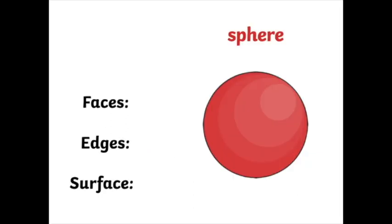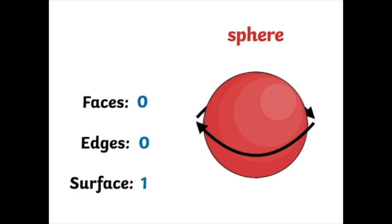What is it? It's a sphere. Do you see any faces on the sphere? Do you see any edges on the sphere? No, neither do I. So there are no faces. There are no edges. A sphere has one curved surface. So when asked to describe a sphere, you could say it has no faces and no edges. It has one curved surface.